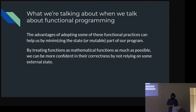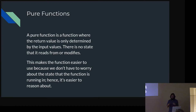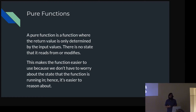When people talk about functional programming, the gist is treating functions as mathematical functions so we can be more confident in their correctness by not relying on external state. A pure function is one where the return value is only determined by its input values — no state read from or modified. This is really good because you don't have to worry about reproducing state. You can take a pure function, run it with the same inputs a million times, and get the same output a million times. The benefits of pure functions are that they're testable, reusable in a new environment without copying state, and easier to maintain and understand.